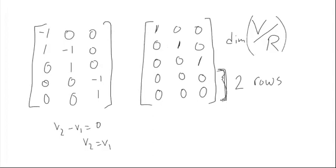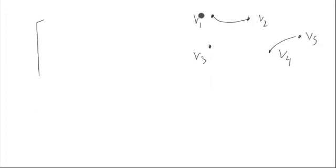Let's look at another example. What if we had something like V1 and V2 connected, with V3 sitting over here by itself, and V4 connected to V5? Making this directed, the matrix is going to have a negative one and one in the first column for five vertices, and the next edge from V4 to V5 gives a negative one and one.